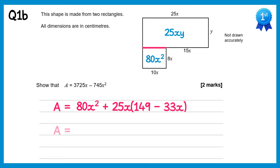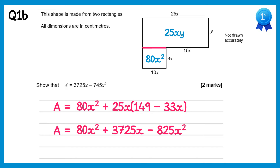Now if we expand this bracket we get A equals 80x squared, 25x times 149 is 3725x, and then 25x times negative 33x is negative 825x squared. Now if we simplify the terms in x squared we'll end up with A equals 3725x take away 745x squared, which is what we were trying to show.